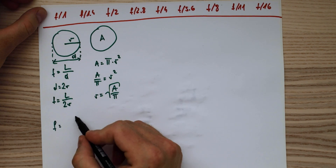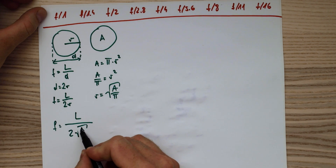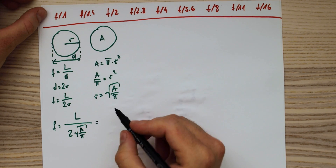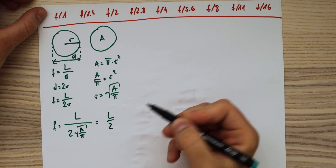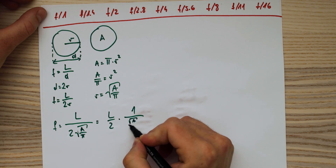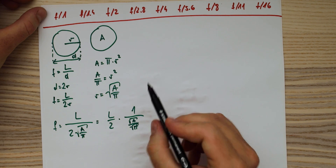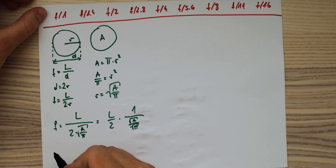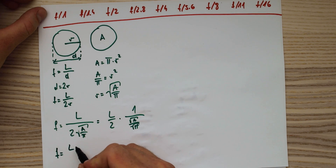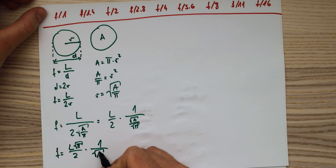Substituting that into our equation, we get: f-stop equals focal length divided by 2 times the square root of area divided by pi. Rearranging, since dividing by something in the denominator is the same as multiplying the numerator by it, we arrive at: f-stop equals l times the square root of pi, divided by 2, times one over the square root of the area.